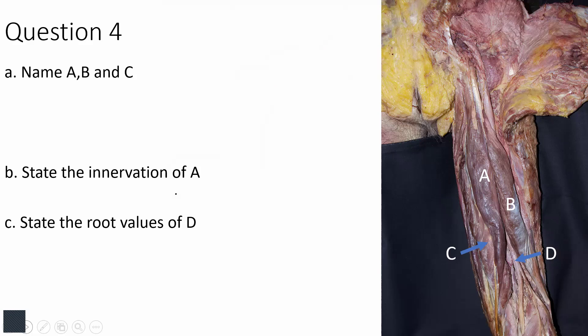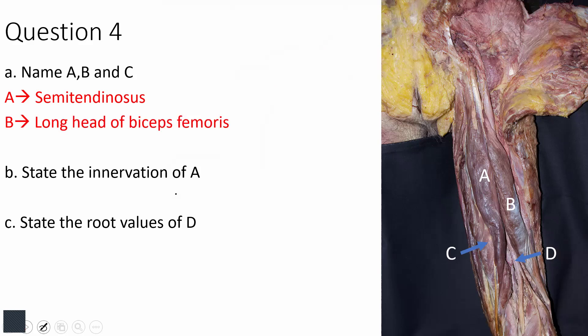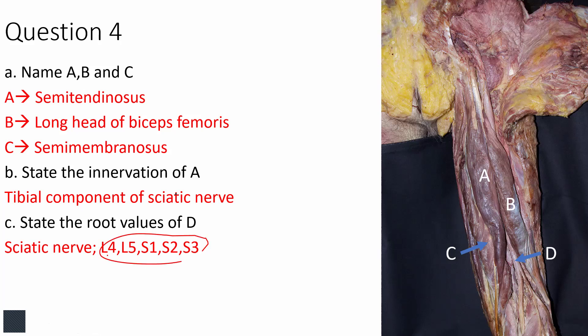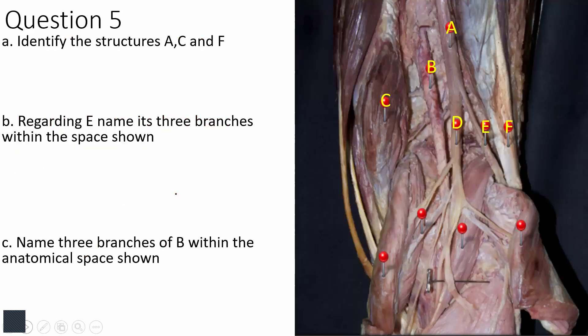For question four, name A, B, and C. If you named A as semitendinosus, that is correct — these are the hamstrings. B is the long head of biceps femoris, and C is semimembranosus; note that semitendinosus lies on top of semimembranosus. All hamstring muscles are innervated by the tibial component of the sciatic nerve. D is the sciatic nerve, root value L4, L5, S1, S2, S3.